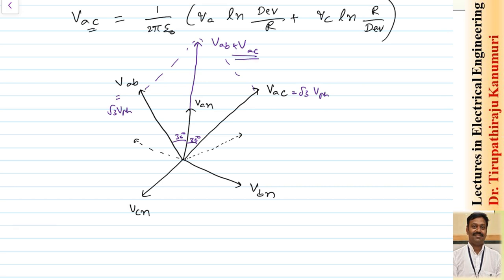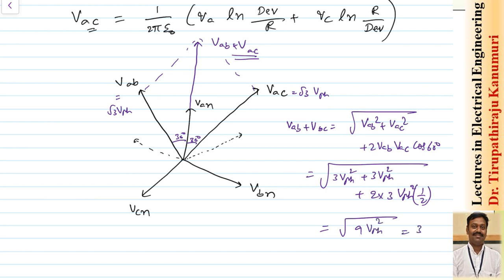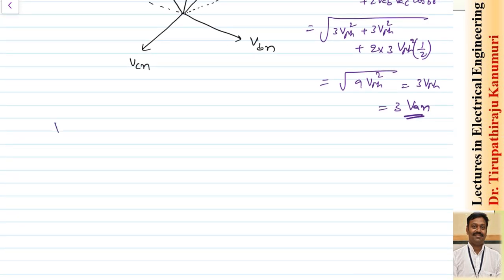To find V_AB + V_AC, since the angle between them is 60 degrees, we use: |V_AB + V_AC| = √(V_AB² + V_AC² + 2·V_AB·V_AC·cos60°). With V_AB = V_AC = √3·V_phase, this becomes √(3V_phase² + 3V_phase² + 2·3V_phase²·(1/2)) = √(9V_phase²) = 3V_phase = 3V_AN. So V_AB + V_AC = 3·V_AN.